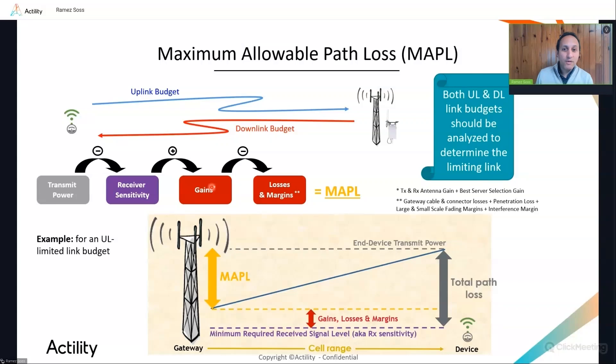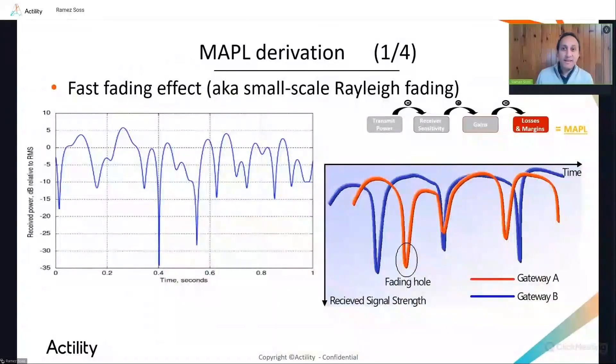And the gains consist mainly of the transmission and receiver antenna gains, plus the coverage overlapping gain offered by macro diversity. The losses are essentially caused by the gateway's cable and connector losses. And then, the design margins consist of additional losses deducted from the total path loss in order to model some specific RF phenomena, such as the fading effect and in-building penetration. In other words, directly converting the total path loss into distance is not correct. Only part of the total path loss can be used to estimate the maximum cell range. And this part is the MAPL.